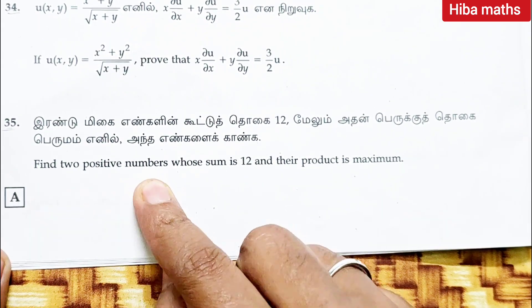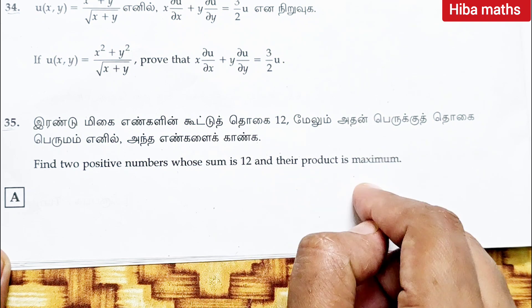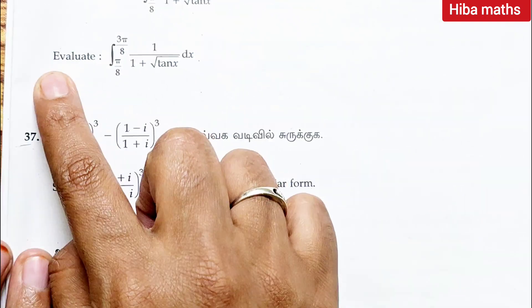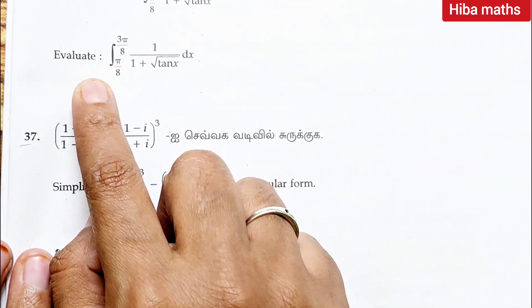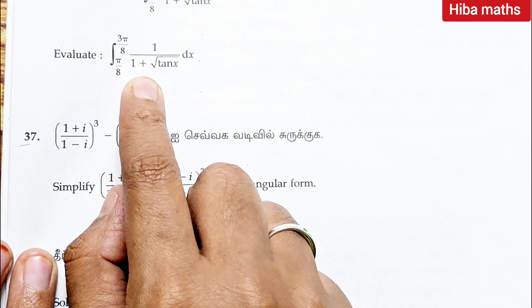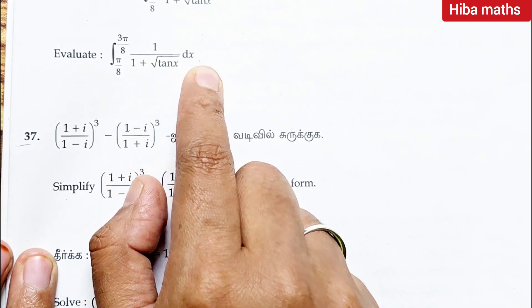Question 35: find two positive numbers whose sum is 12 and their product is maximum. Question 36: evaluate pi by 8 to 3 pi by 8, 1 by root of 1 plus root of tan x dx.